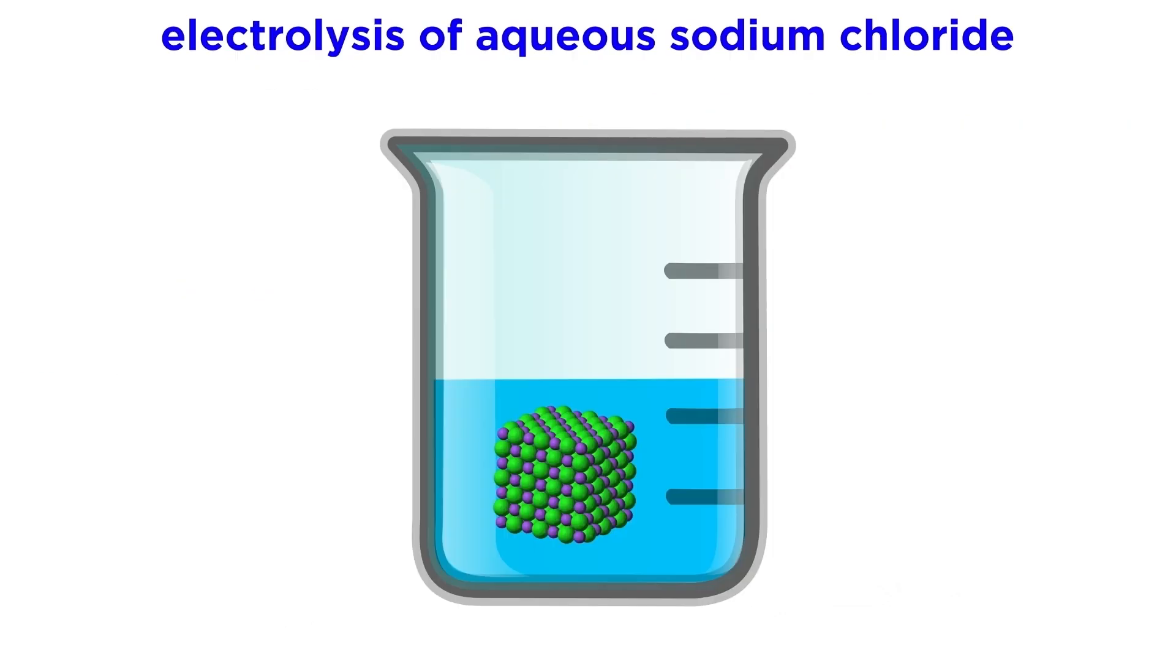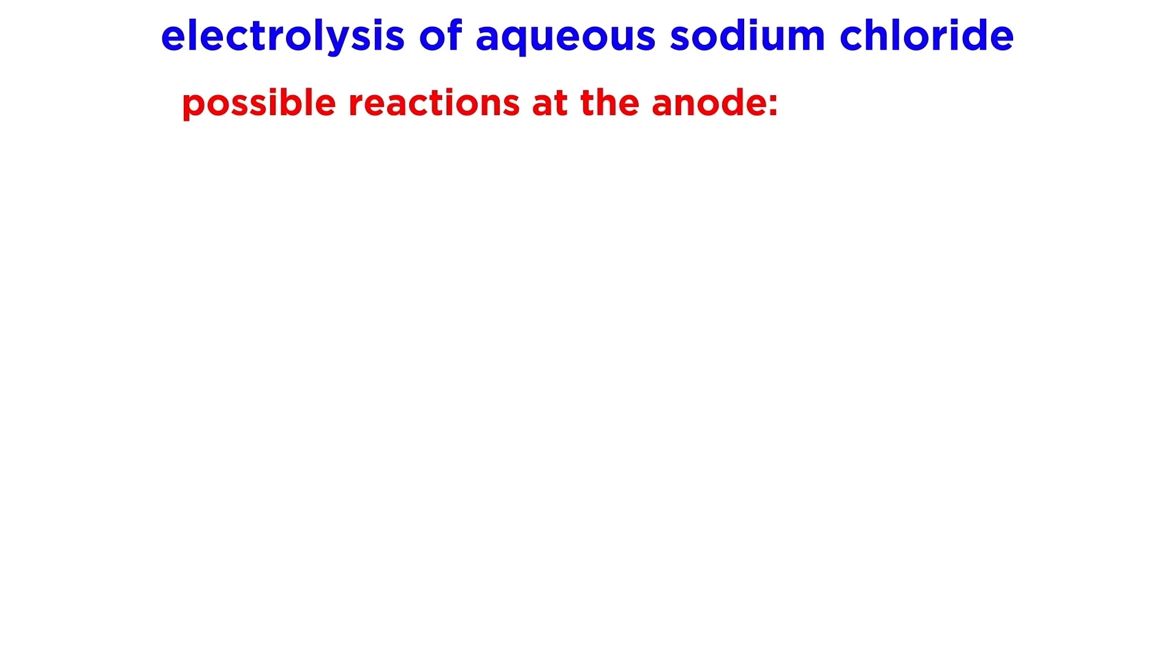Lastly, let's examine the electrolysis of aqueous sodium chloride. The interesting thing about this electrolytic cell is that more than one species could be oxidized or reduced. Let's see what could happen at the anode.